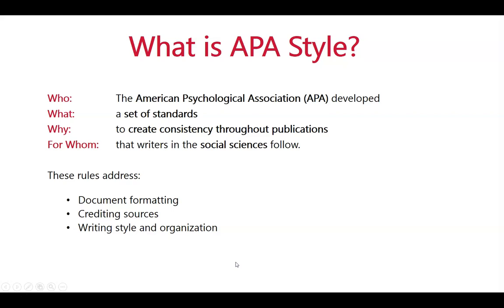So what is APA style? The American Psychological Association, or APA, developed a set of standards to create consistency in publications that writers of social sciences will follow. Social sciences include things like sociology, education, library science, and business. The rules and standards address how documents are formatted, how to credit sources, and basic writing style and organization of a paper.